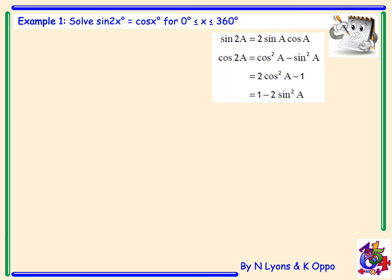Example 1: Solve sin2x = cosx for x between 0 and 360 degrees. The first thing we need to do is get both trig terms to the same side, so we write sin2x - cosx = 0. Because we have a double angle and a single angle, we go to our double angle formulae and replace sin2x with 2sinx·cosx.